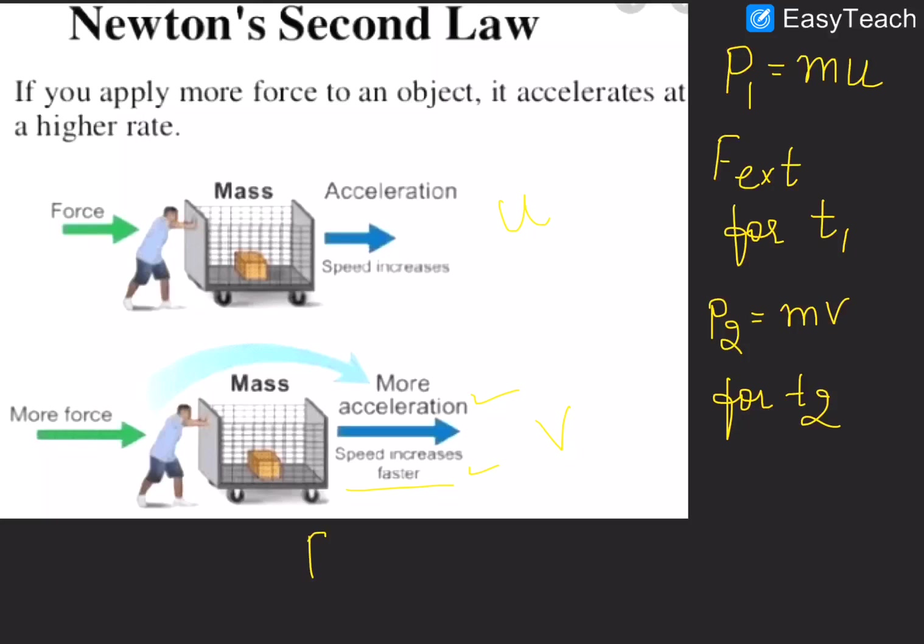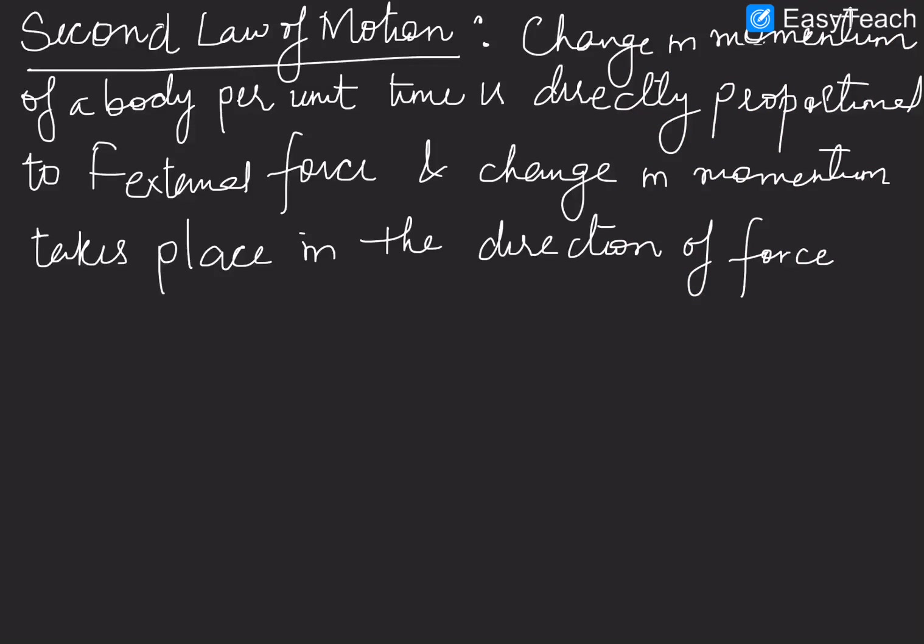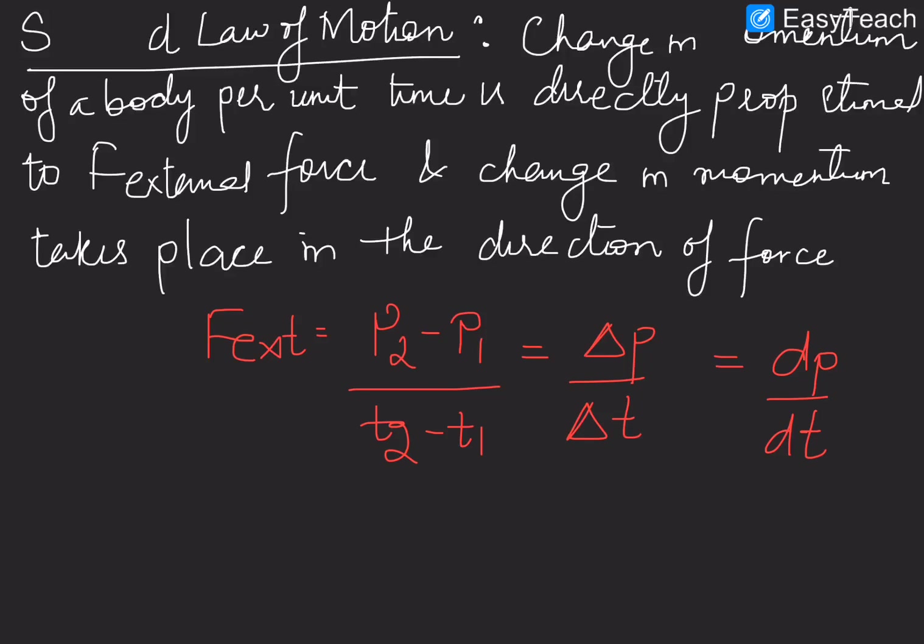And if the velocity changes, it means the momentum also changes and it becomes MV up to some time T2, which simply means that external force is always required to change the momentum in a given time. This is what Newton's Second Law is. The statement of second law of motion says that the change in momentum of a body per unit time is directly proportional to the external force, and the change in momentum always takes place in the direction of force, which can be written as F external equals final momentum minus initial momentum upon change in time, which can also be written as delta P by delta T. And in some books you will see it is written as differential of momentum with respect to time, which means when the time interval is very small, then delta P by delta T changes to dP by dt.